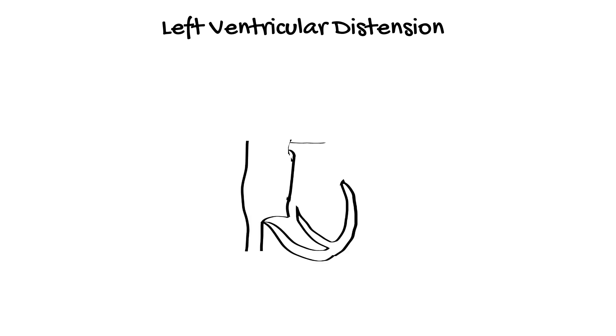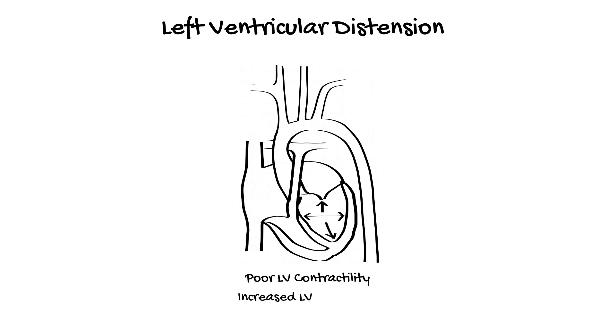The next complication to talk about is left ventricular distension. This occurs when the left ventricle is unable to generate enough tension for the aortic valve to open during systole, due to the pathology affecting the ventricle, plus the increased afterload from retrograde ECMO flow. This is exacerbated by any aortic valve regurgitation.